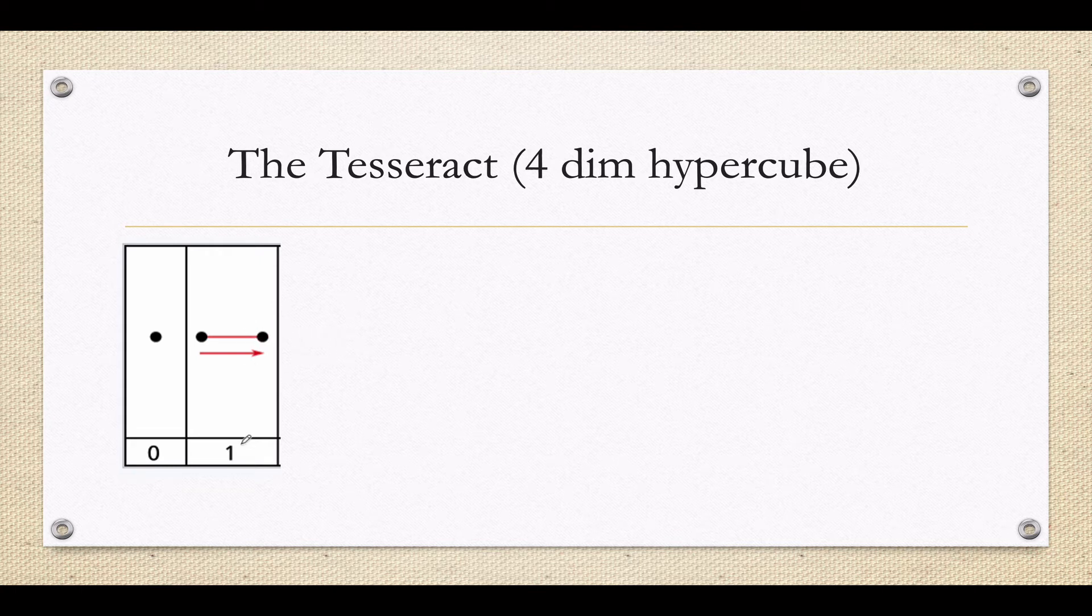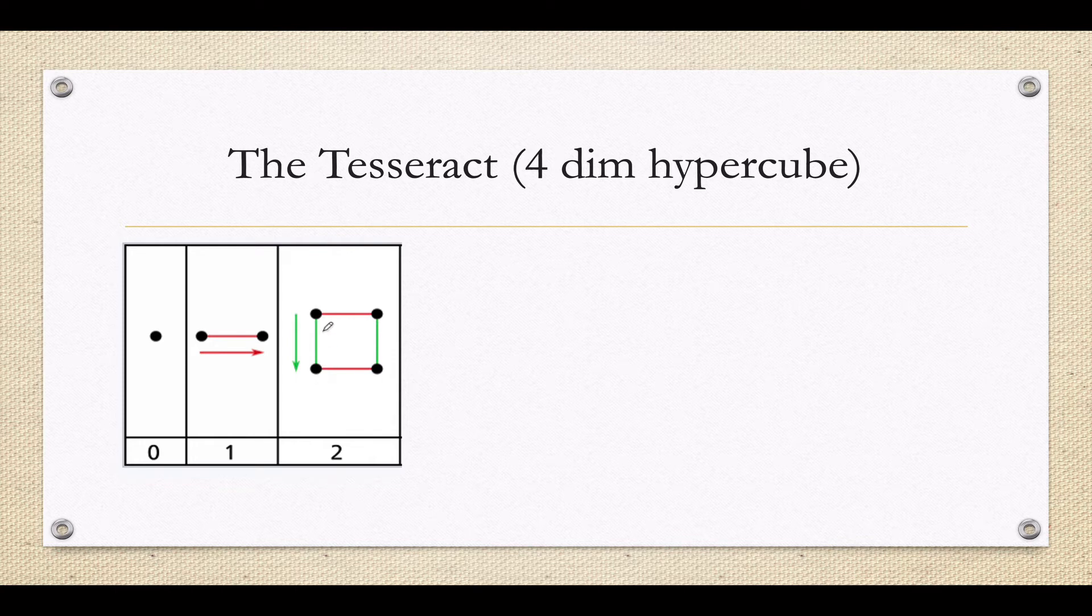Well, I can't move it perpendicular if I'm living in one dimension. If I'm on the number line, I can't move it up and down. So what I've got to do is move up to two dimensions, and then I can move it one unit perpendicular. So here's my first copy of a one-dimensional hypercube. Here is my other copy of the one-dimensional hypercube.